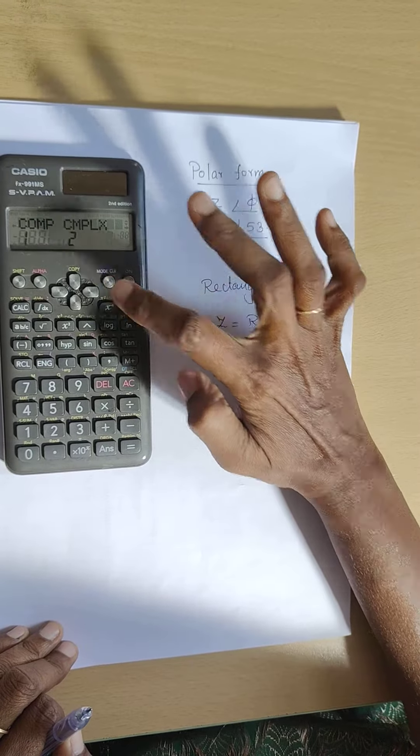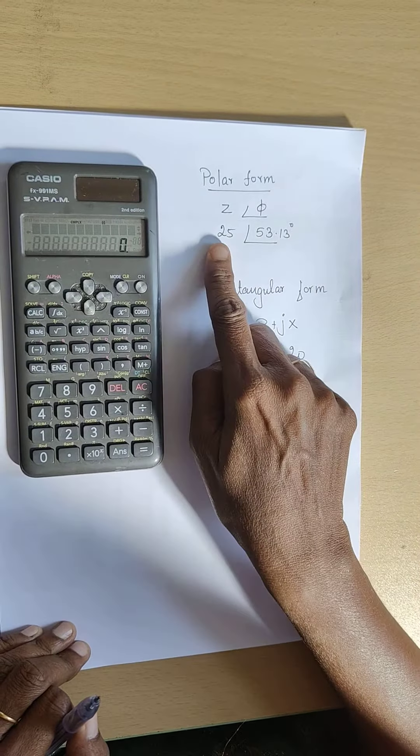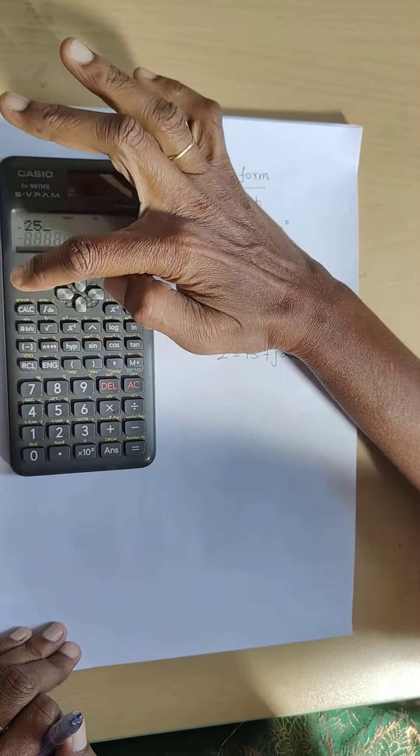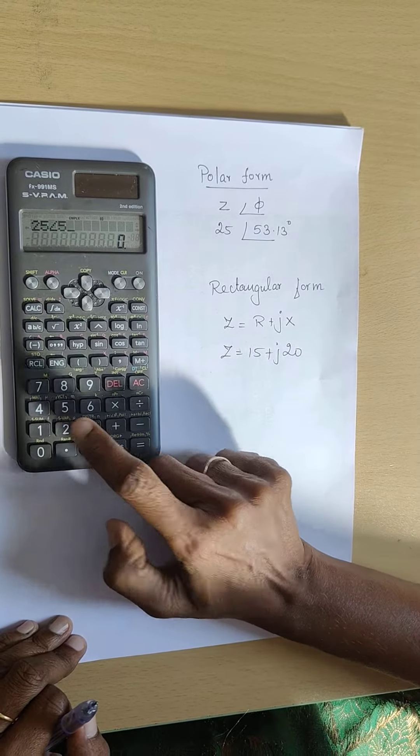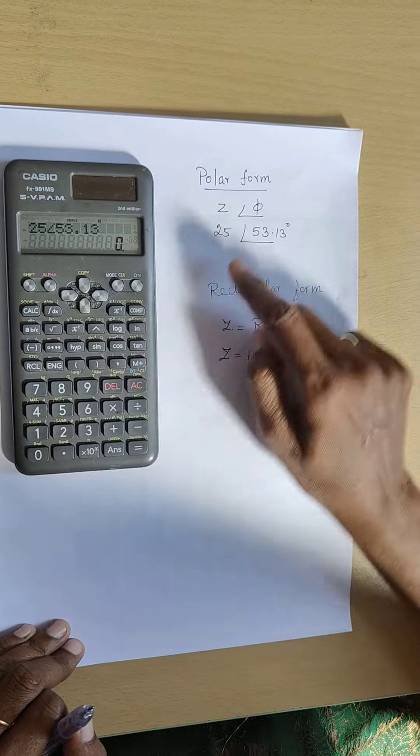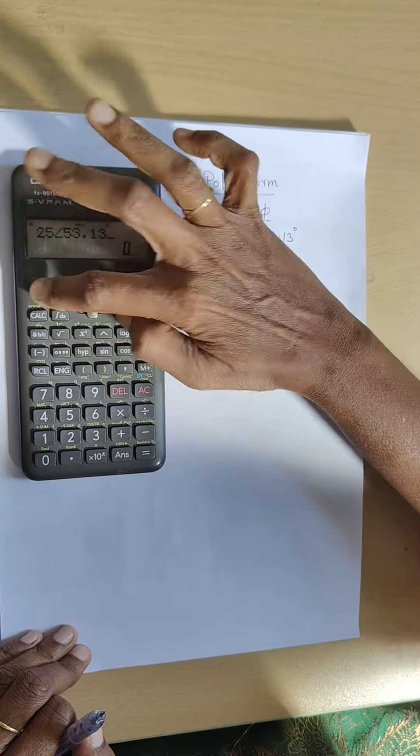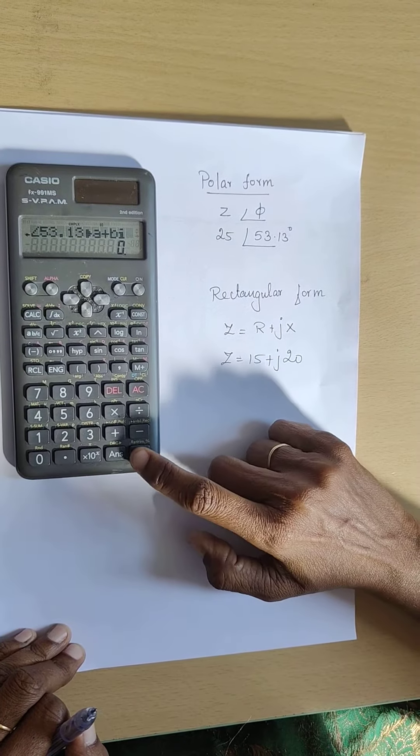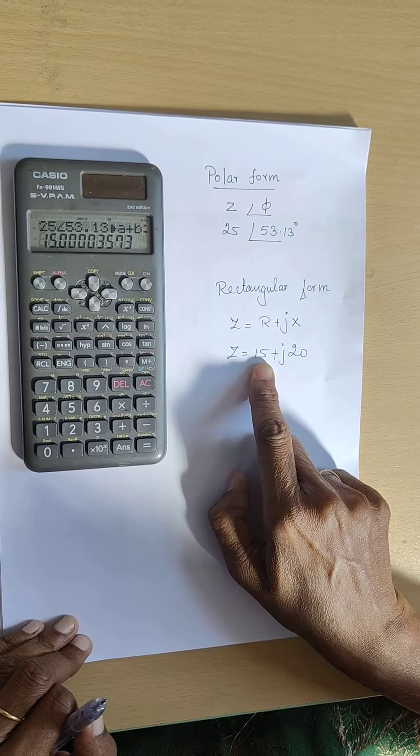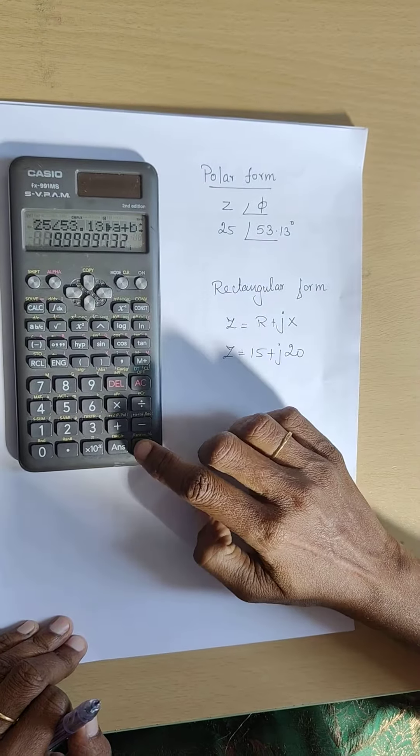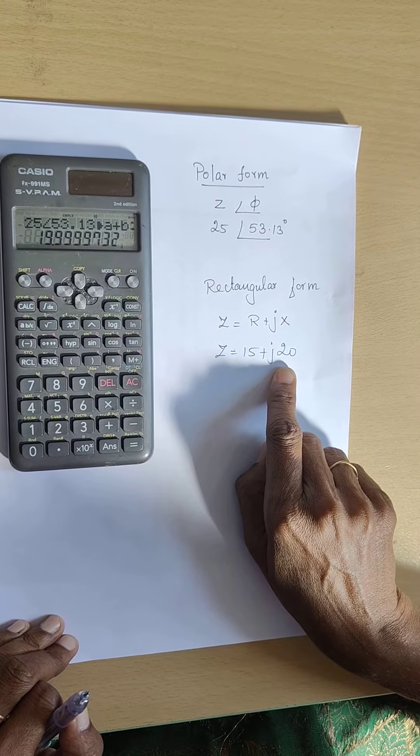Same procedure: go to mode, make it complex mode. Enter 25, then shift, angle, 53.13. Now convert this form to rectangular. Press shift, rectangle, minus, equals to get 15. Again, press shift, equals to get the complex reactance value 19.9, which is approximately 20.